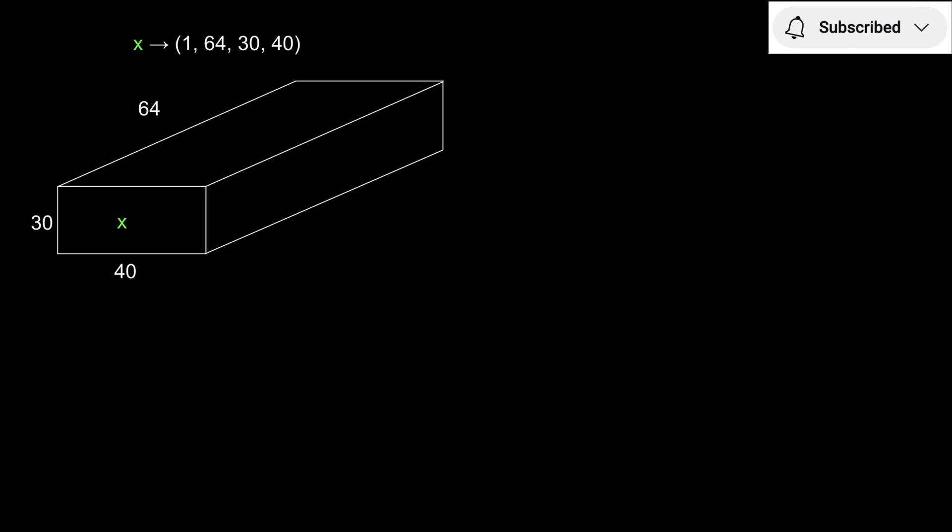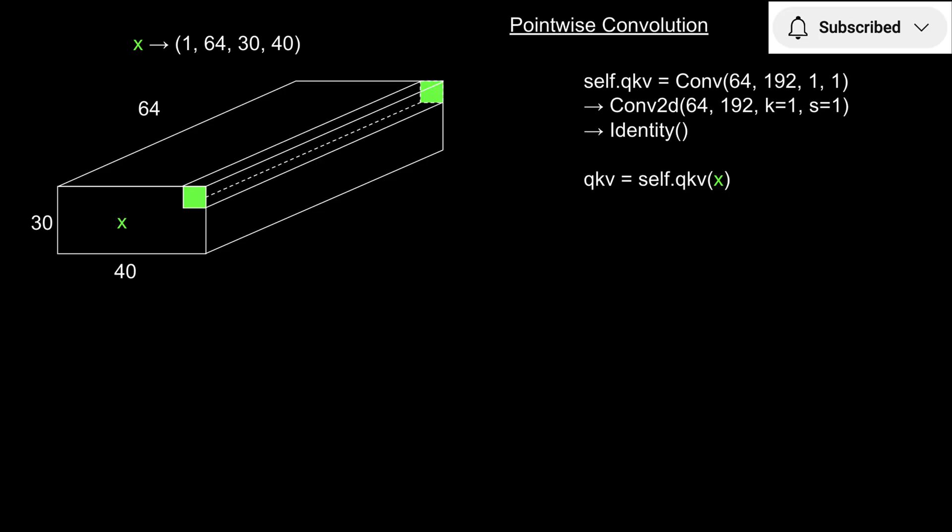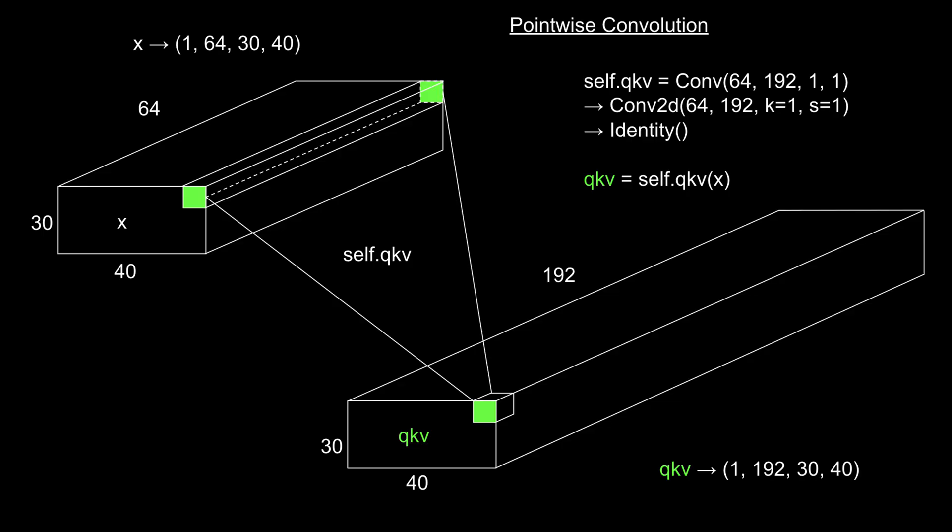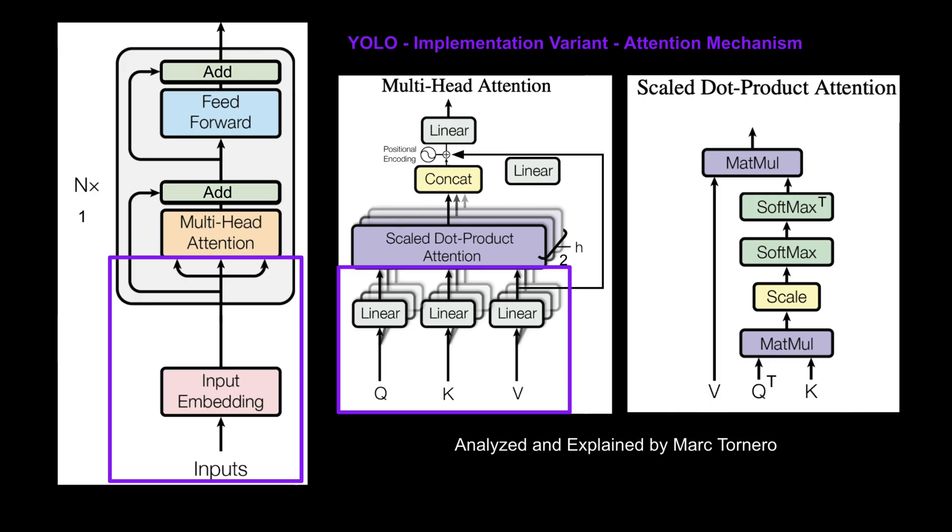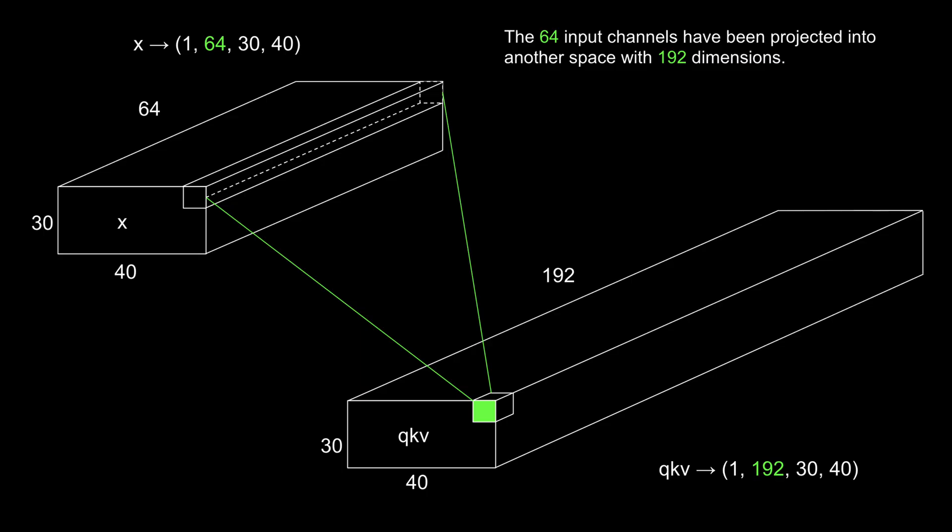With that foundation in place, let's return to our input tensor. The first operation we apply is a pointwise convolution, which produces a new tensor named QKV. There's no activation in this layer, it's a purely linear transformation. The 64 input channels are projected into 192 output channels. In essence, we've applied a linear convolution to generate the QKV tensor.